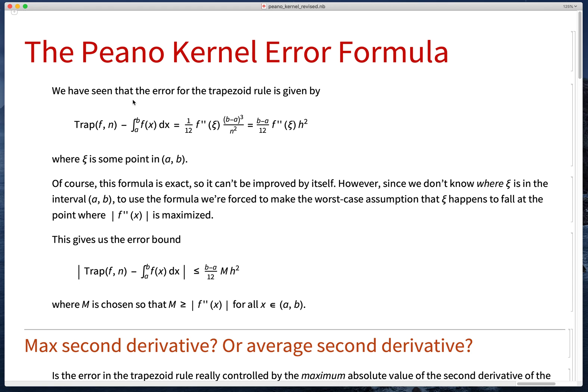Remember that our standard estimate of error for the trapezoid rule is given by this formula here. The difference between the trapezoid rule estimation and the actual integral equals 1/12 times the value of the second derivative at some point in the interval times (b-a)³/n², or if you like (b-a) times h squared, the width of the subdivision squared.